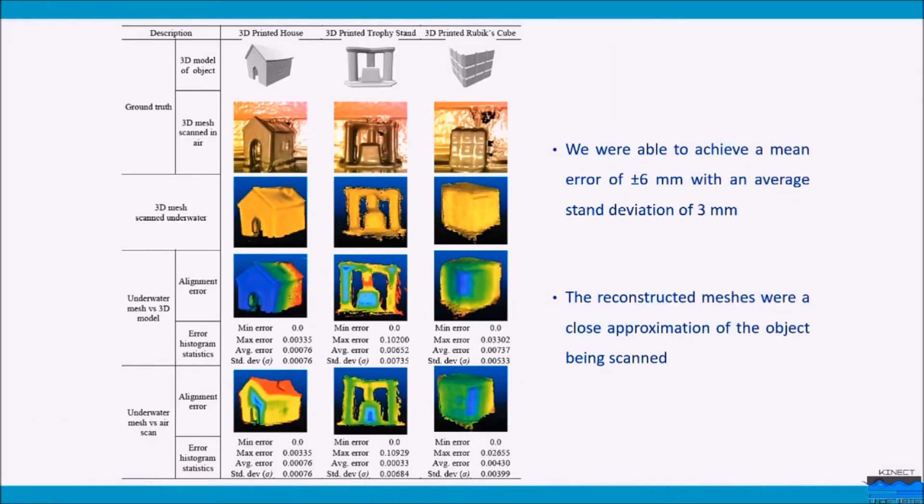For these objects, we were able to achieve a mean error of ±6mm with an average standard deviation of 3mm. The reconstructed meshes were a close approximation of the objects being scanned.